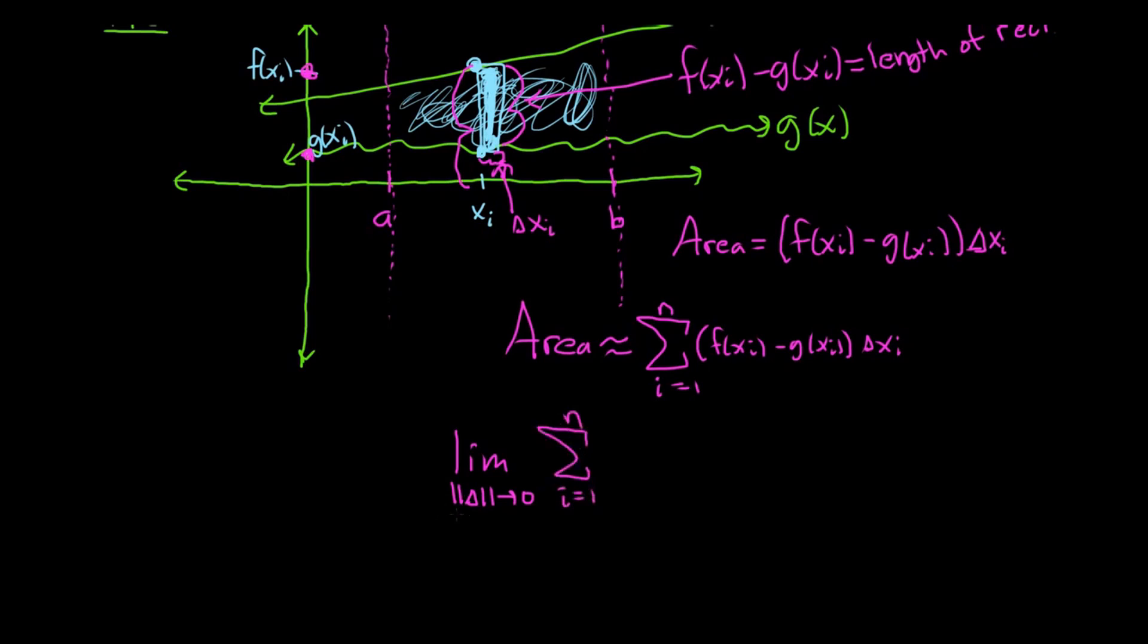So this right here is the length of the largest subinterval. It's the length of the large subinterval. So it's the width of the largest rectangle. And we're saying that the width of the largest rectangle is going to zero. So if the width of the largest rectangle goes to zero, that means the width of all the rectangles go to zero. That means that you have infinitely many rectangles.